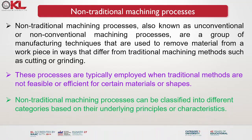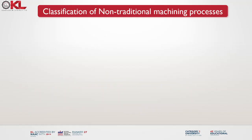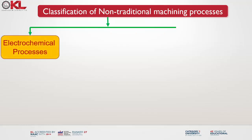Non-traditional machining processes can be classified into different categories based on their underlying principles or characteristics. The first classification is electrochemical processes.